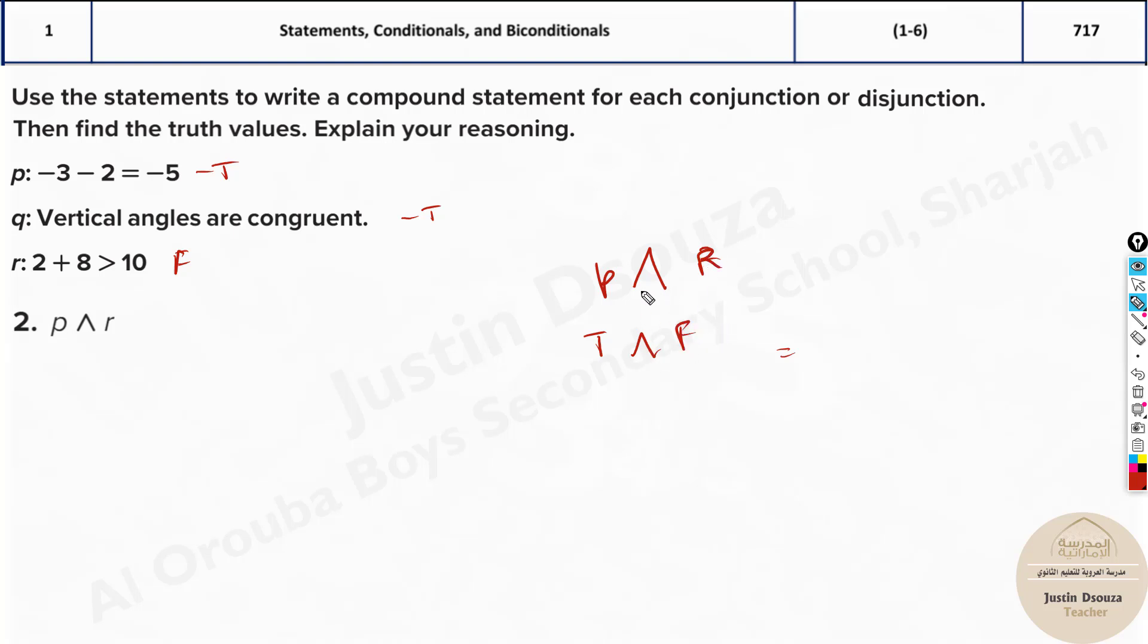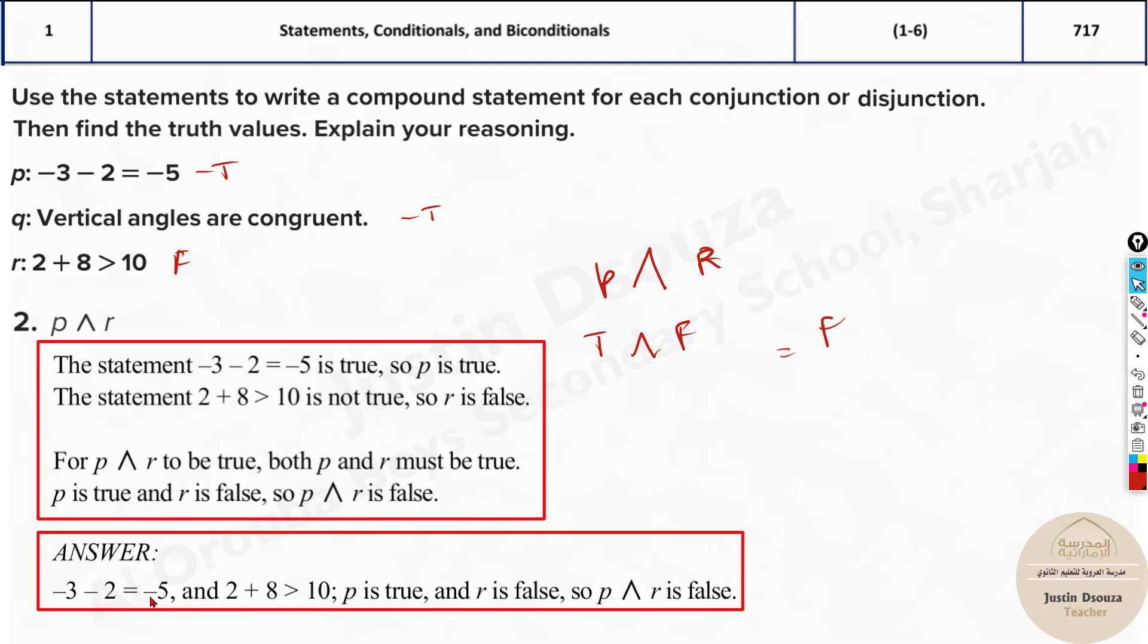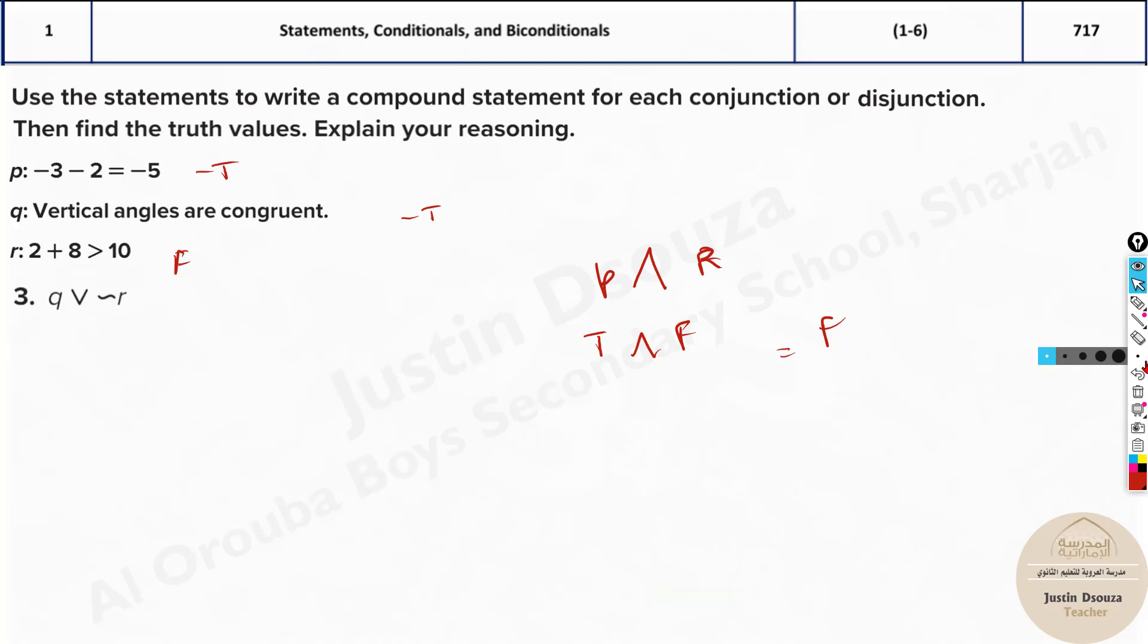It is false. If one is false in an AND statement, it becomes false. No matter what, if even a single one, if P or R is false, it's false. So here the final answer will be false. You can see, the first statement is true and the second statement over here is false. So therefore, P and R is false.